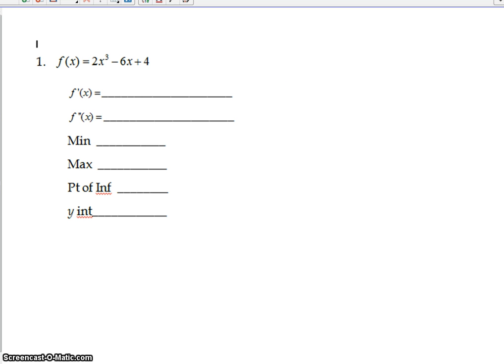Alright, so if we look at an example of how we're going to go about doing this. Number one, it asks you to find your first and second derivatives. So again, 2 times 3, reduce by 1. Again, it's that linear.